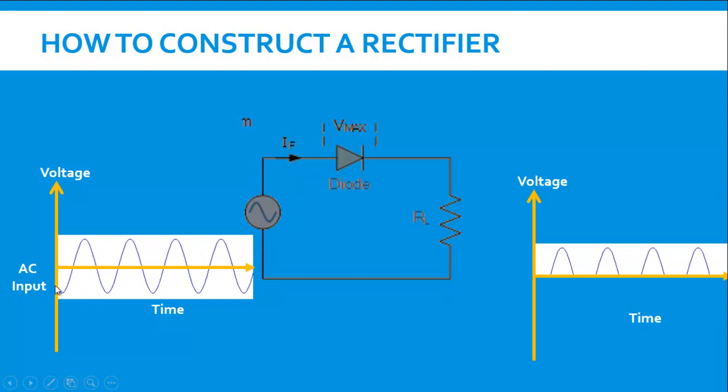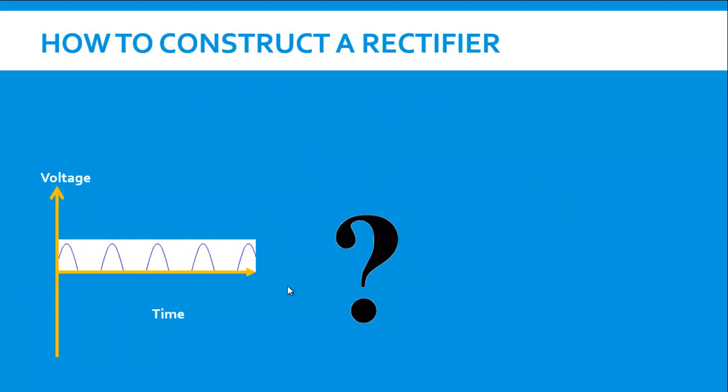The negative voltages, the negative supply, the negative values are chopped off. This is called a half wave rectifier.